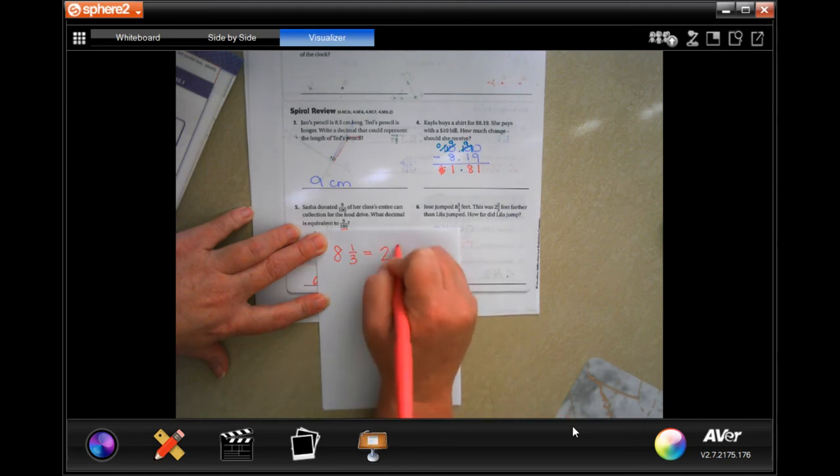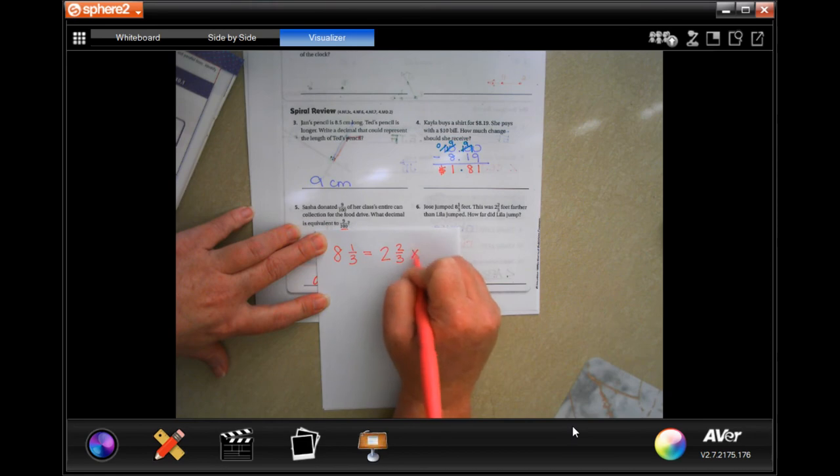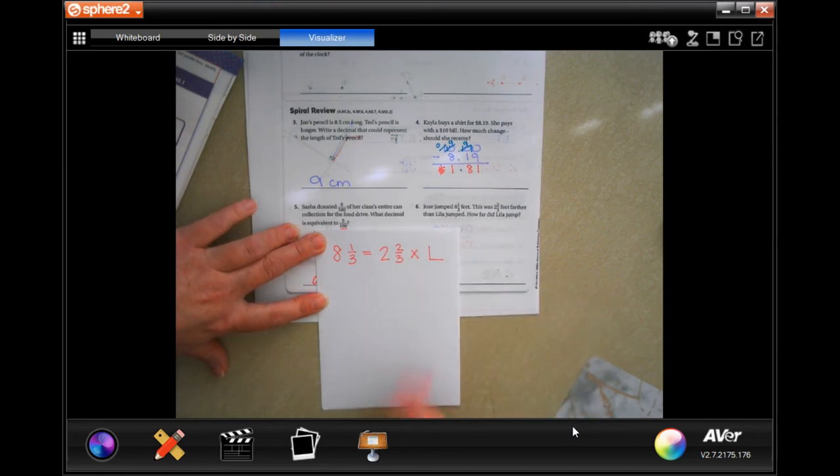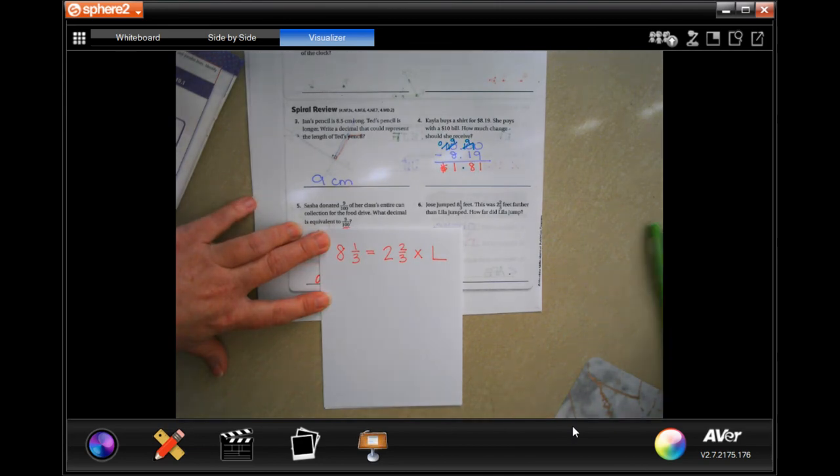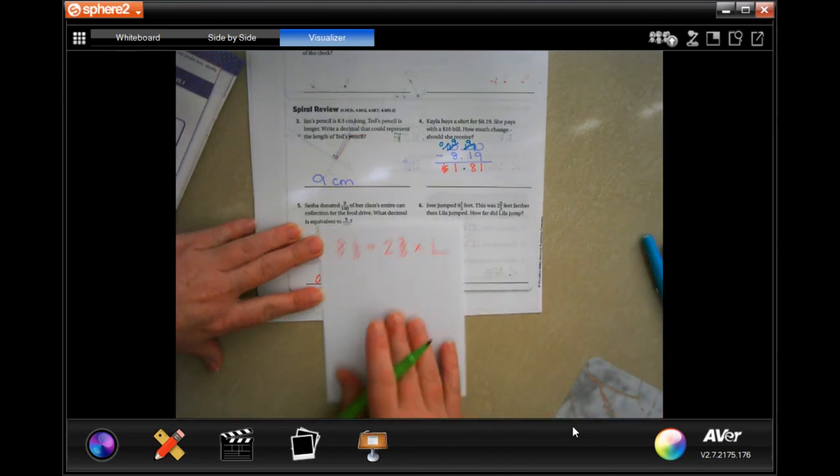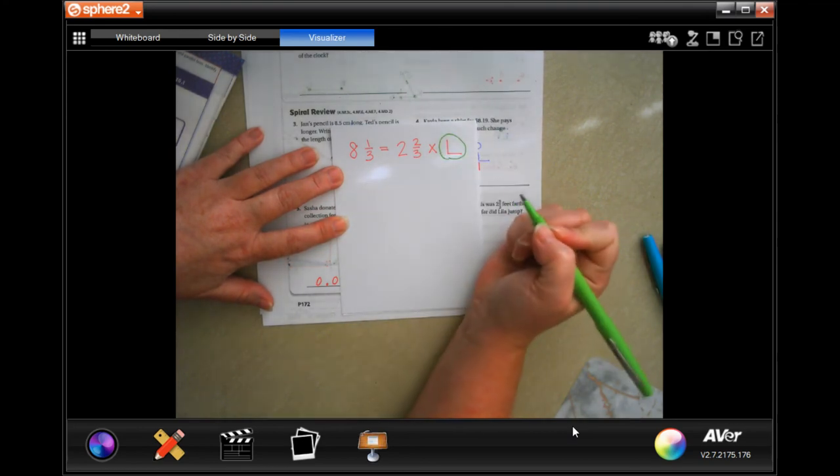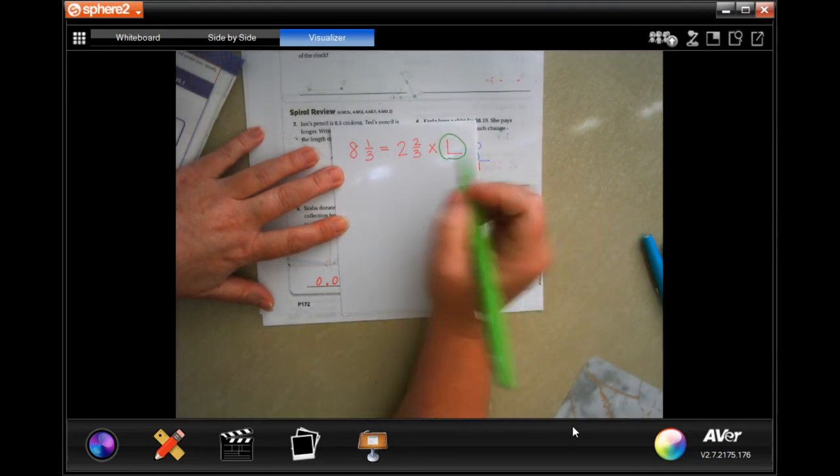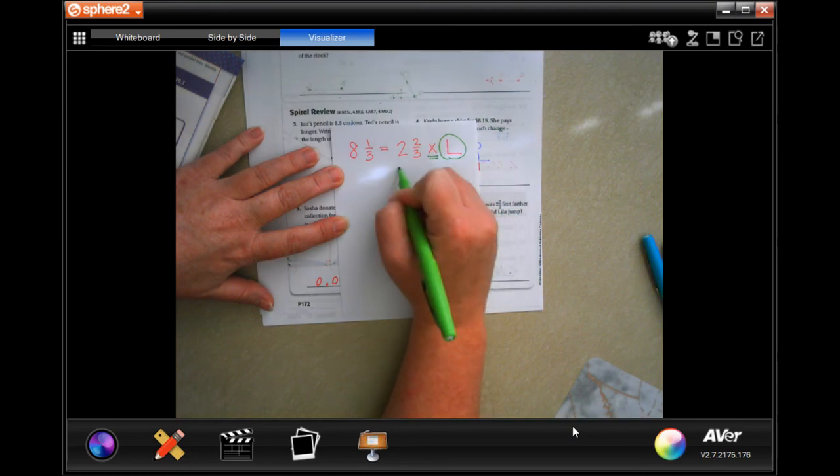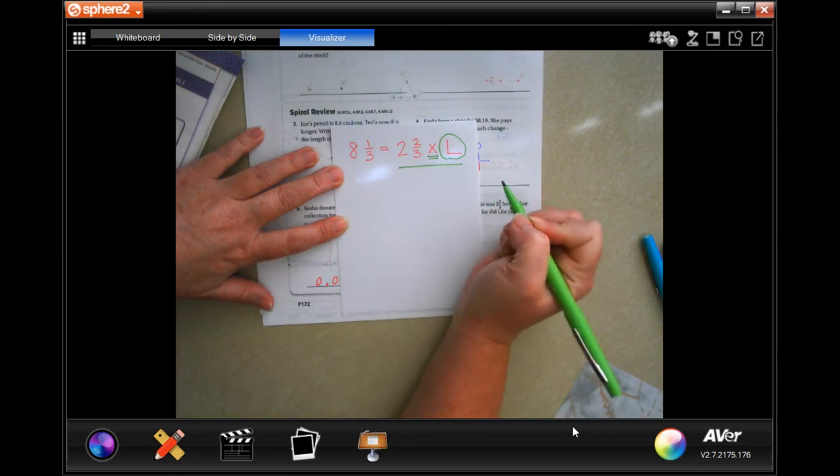8 and 1/3 feet is 2 and 2/3 feet times Lila's. I'm going to show you how to start doing a little bit of algebra. I need to get how far Lila jumped.